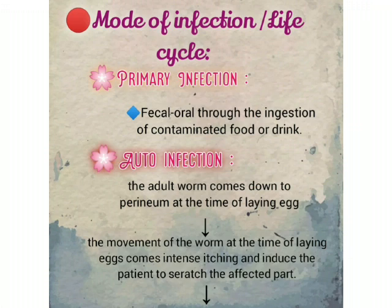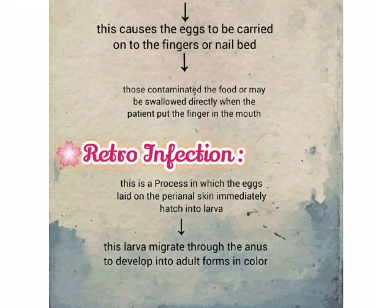Auto-infection: the adult worm migrates down to the perineum at the time of laying eggs. The movement of the worm causes intense itching and induces the patient to scratch the affected part. This causes the eggs to be carried on the fingers or under the nails, which then contaminate food or may be swallowed directly when the patient puts the finger in the mouth.